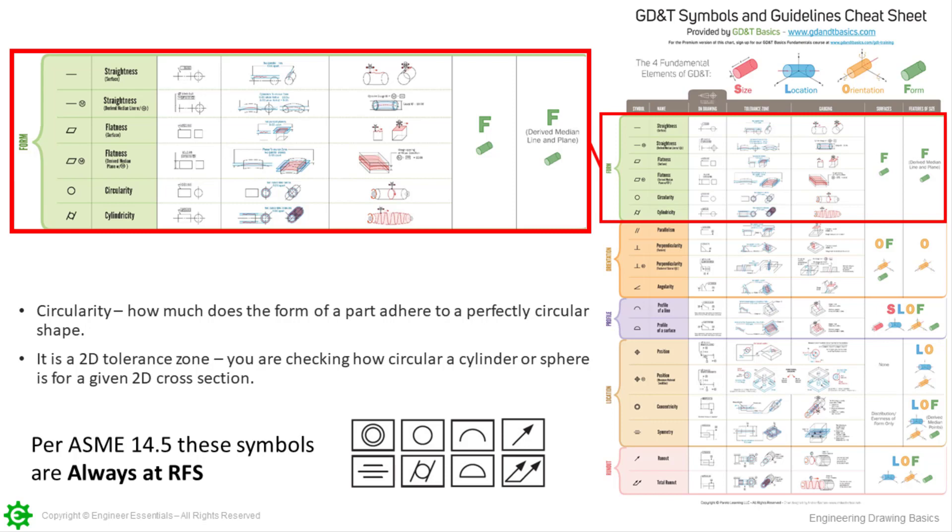Down at the bottom, these are just real quick references to make sure everybody remembers this stuff. Per ASME these symbols that I have shown are always at RFS. That's good to know because it means that we don't have any MMC modifier or LMC modifier involved with this, so it keeps our numbers a little bit easier to understand. If you haven't downloaded this at the end I'm going to show the link there for downloading the free wall chart.